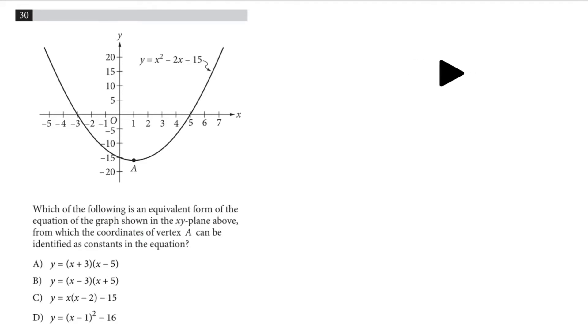Which of the following is an equivalent form of the equation of the graph shown in the xy-plane above from which the coordinates of vertex A—well, this is the vertex—can be identified as constants in the equation?